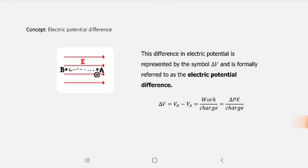Manasabi din natin na yung point A is the low potential, and point B is the high potential. So kita natin na between them, there's a difference in electric potential. This difference in electric potential is represented by the symbol delta V, and is formally referred to as the electric potential difference.